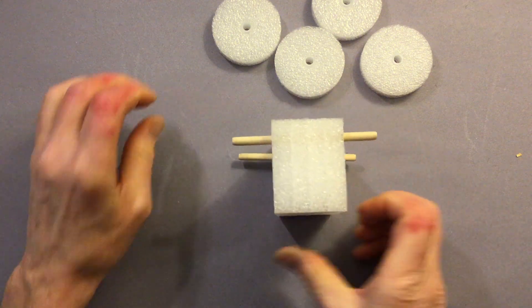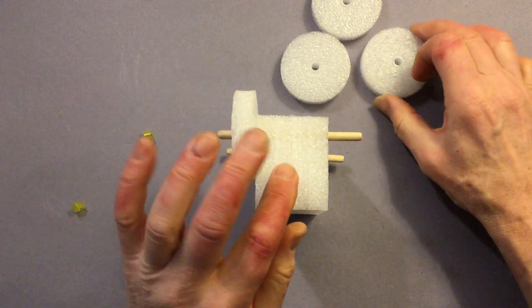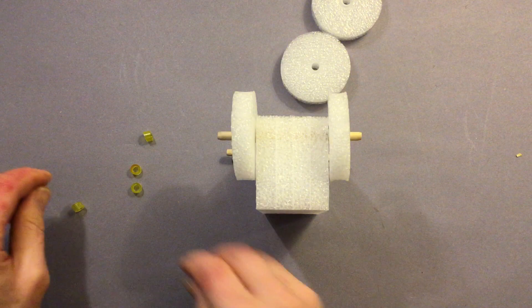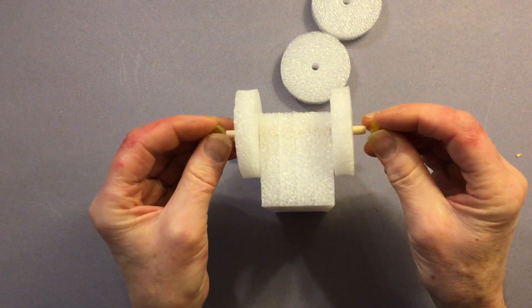There's our axles and now the wheels, two wheels to go on each axle and then a clip from either side.